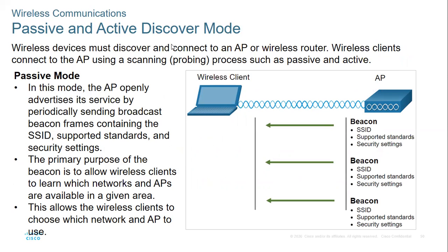There are two types of discovery modes: passive and active. In passive mode, the access point advertises its services by sending beacon frames. The access point is looking for clients. The beacon contains the SSID, the supported standards, and security settings.